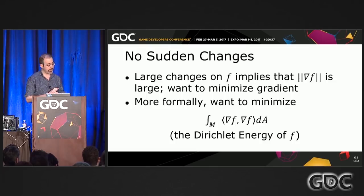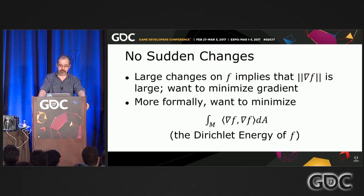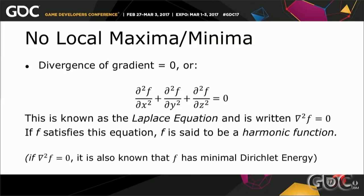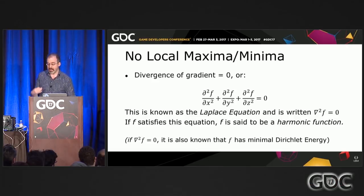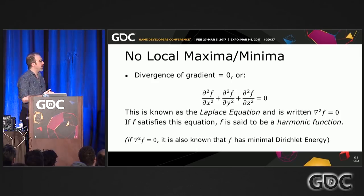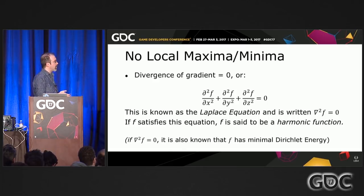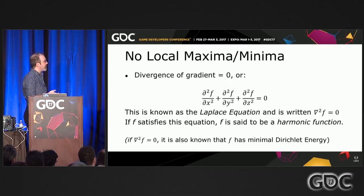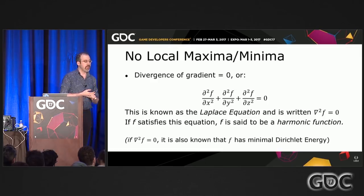This was one of the first problems studied in the calculus of variations. Stating that we don't want any local maximum or minima means that if we take the divergence of the gradient function on our mesh, we would like it to be zero. If there's a point where the divergence is greater than or less than zero, it means the function is curving into or out of a local maxima or minima. If we write down what the divergence of the gradient is, you end up with the sum of second-order partial derivatives of the function on the mesh. This is known as the Laplace equation, written with the upside-down triangle. If F has a Laplacian of zero everywhere, we call F a harmonic function.